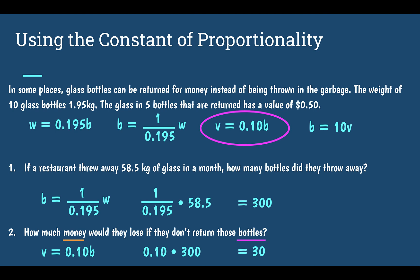Now, I didn't put units on those answers, but it is a good habit to write units. So 300 should have been labeled 300 bottles, and 30 should have been labeled $30.